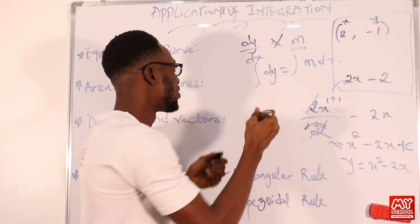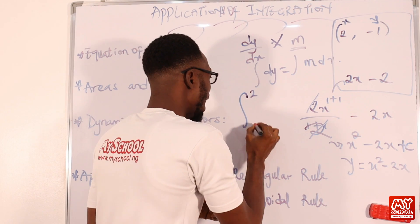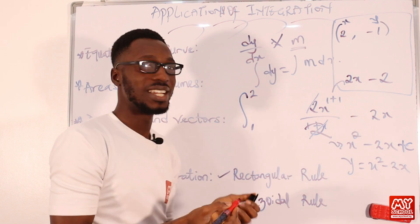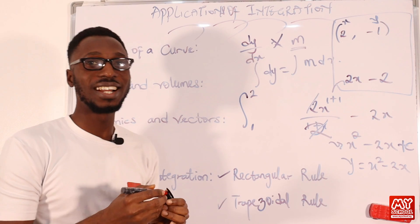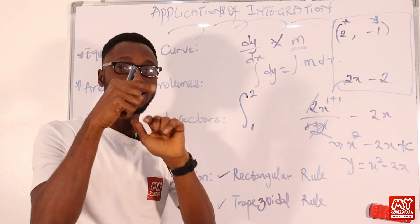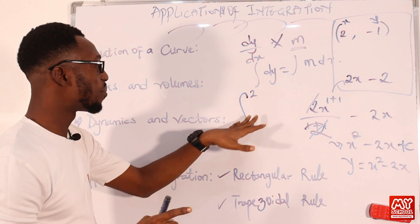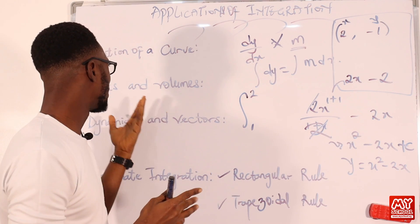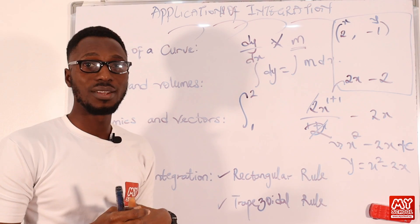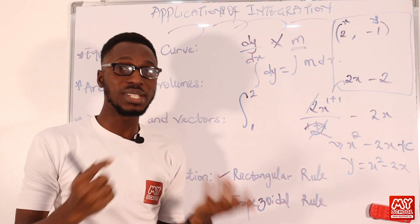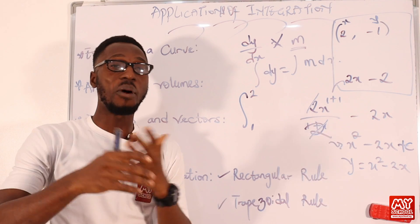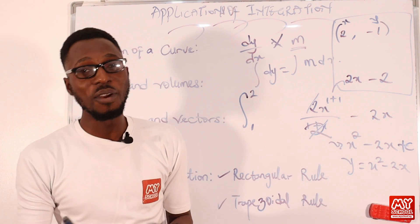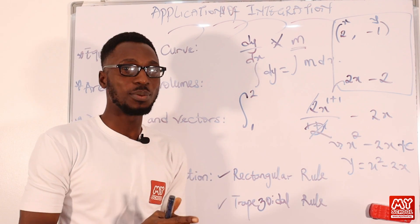So once you have under the curve, it is applicable that you use a definite integral. Remember in definite integral, you have your upper limit and your lower limit. So just the way you carry out your definite integral, whereby the constant sign will be removed, that's the same thing we are going to do. There are certain notes that we should keep at heart.